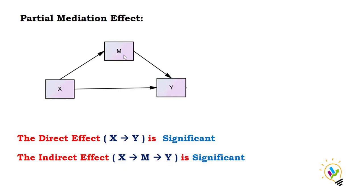So the direct effect is significant and the indirect effect is also significant — this is called partial mediation. It is called partial mediation because the mediation is not only happening through the mediator M, but also directly. This is called partial mediation effect.